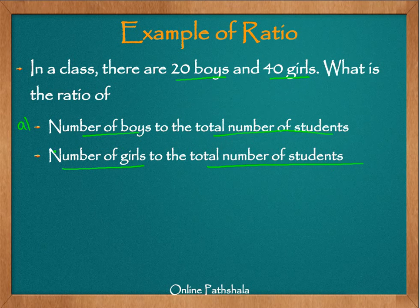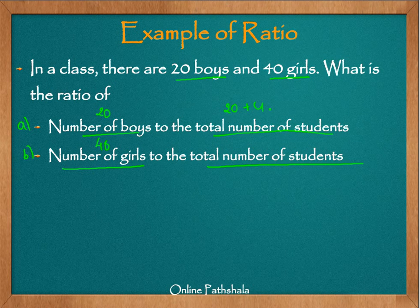In both examples A and B, we know the number of boys is 20 and the number of girls is 40. But we are not given the total number of students. That is pretty easy to find — just add 20 boys and 40 girls. 20 plus 40 is 60, so the total number of students is 60.